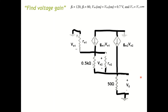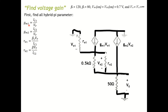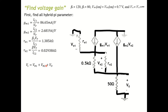Now we convert everything to the hybrid-pi model. We need to determine the hybrid-pi parameters: gm1, gm2, Rpi1, and Rpi2. All equations are provided — just plug in the numbers and calculate each parameter. Once you have everything, move to the next step: find the expression for input voltage and output voltage, then divide to get the gain.